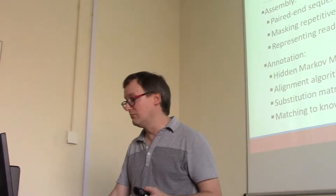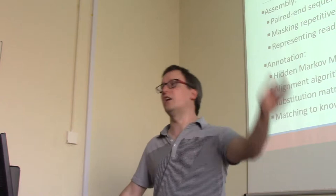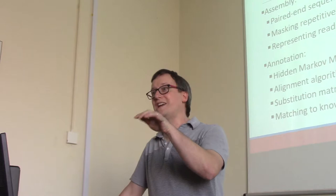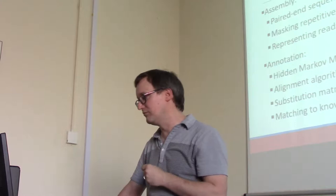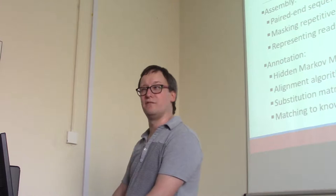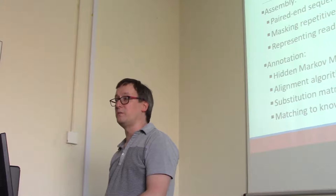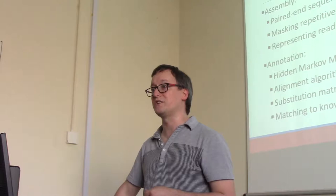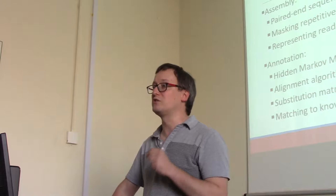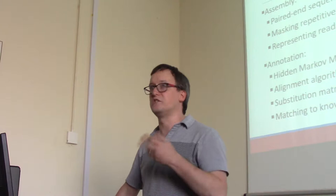From there, we're going to talk about annotation. A big, long contig is not the same thing as a genome — that's the sequence of a genome, but it still lacks the annotation. So how do we find the informative bits? We'll talk first about hidden Markov models, which are an advanced topic, but I want you to understand their roles. We'll also talk about alignment algorithms — BLAST is one of the most prominent examples — emphasizing substitution matrices.